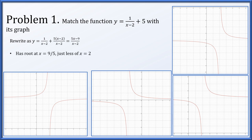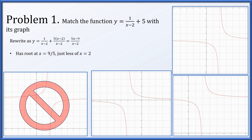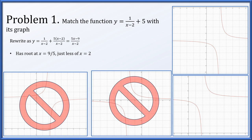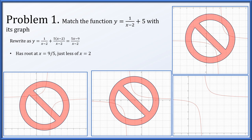We determine that the function has a root at x = 9/5, which is just a little bit less than 2. The first graph has its root a little bigger than 2, so that one's out. One graph does not have a root at all. Another graph also has a root just a little larger than 2. The function has a vertical asymptote at x = 2 and a horizontal asymptote at y = 5, since numerator and denominator are the same degree with a ratio of leading coefficients of 5. The remaining function appears to have a horizontal asymptote at y = 5.